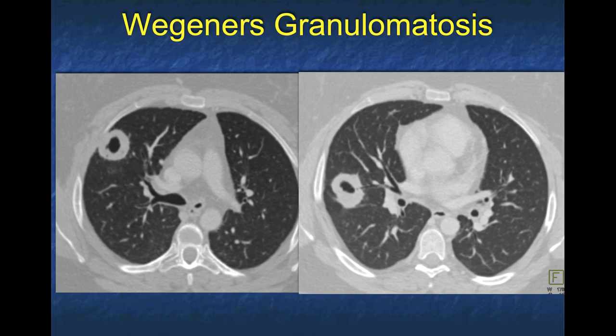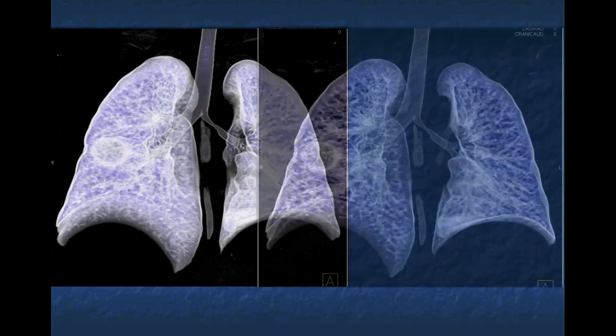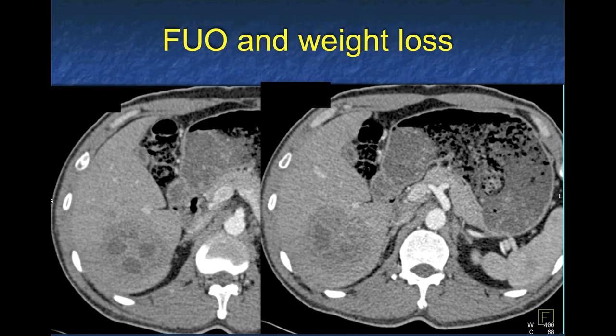Wegener's granulomatosis — cavitary lesions that almost look septic, and thickening and narrowing of the trachea. A beautiful case. Look at that airway with virtual bronchoscopy — doing automated bone removal and using this in-space tool, you can show the airways very nicely.